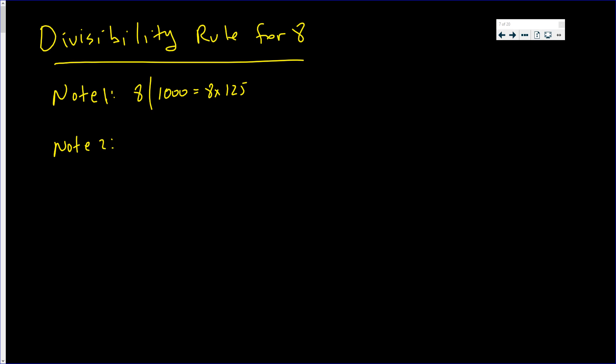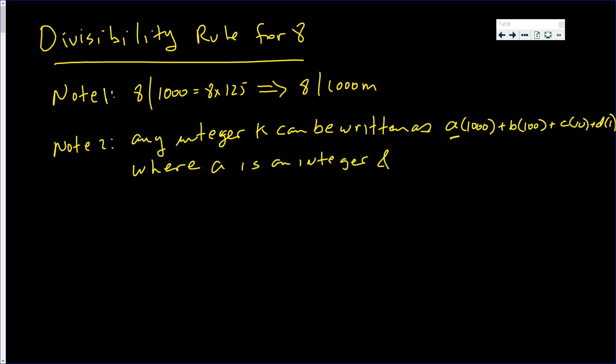And note 2 is the following. Any integer k can be written as a multiple of a thousand plus a multiple of a hundred plus a multiple of ten plus a multiple of one. By the way, this also implies that 8 divides a multiple of a thousand. And I should say the following where A is an integer and B, C, and D are digits.